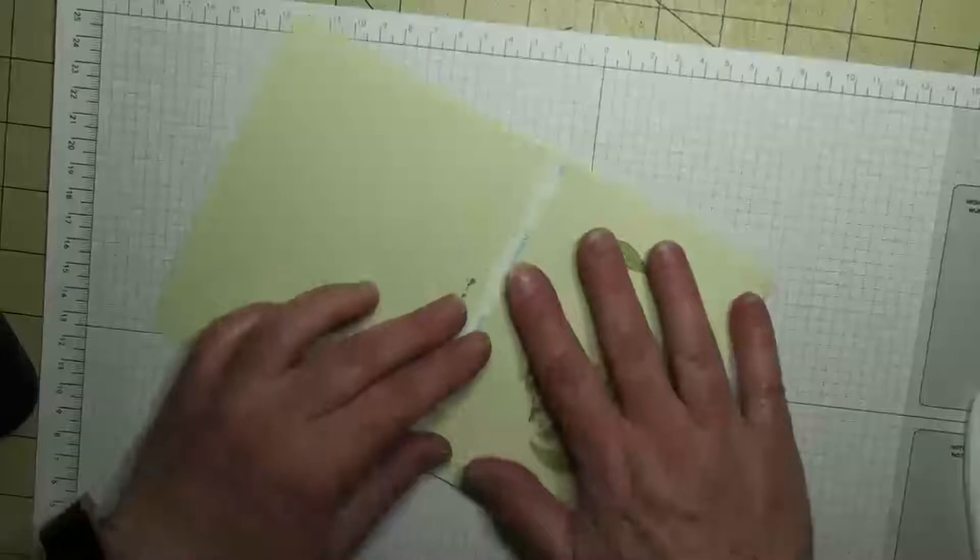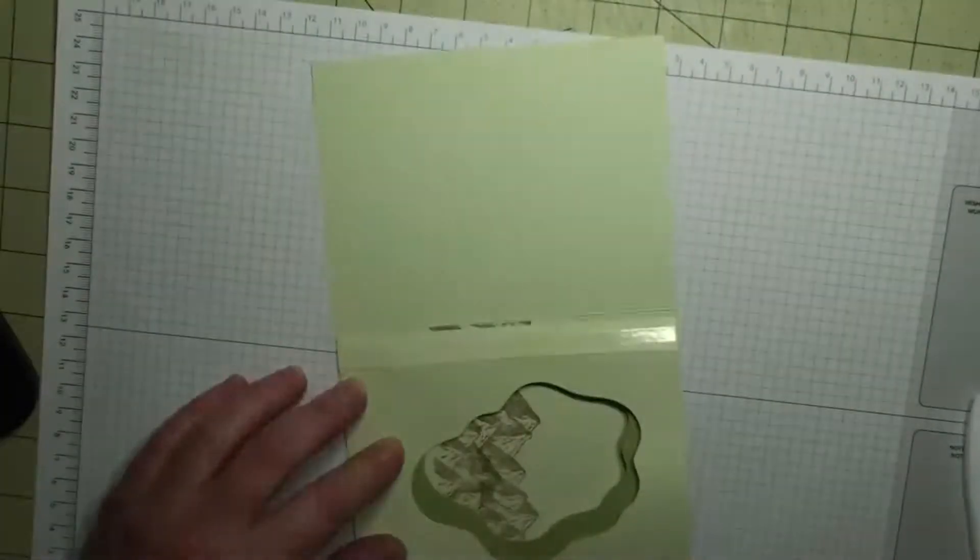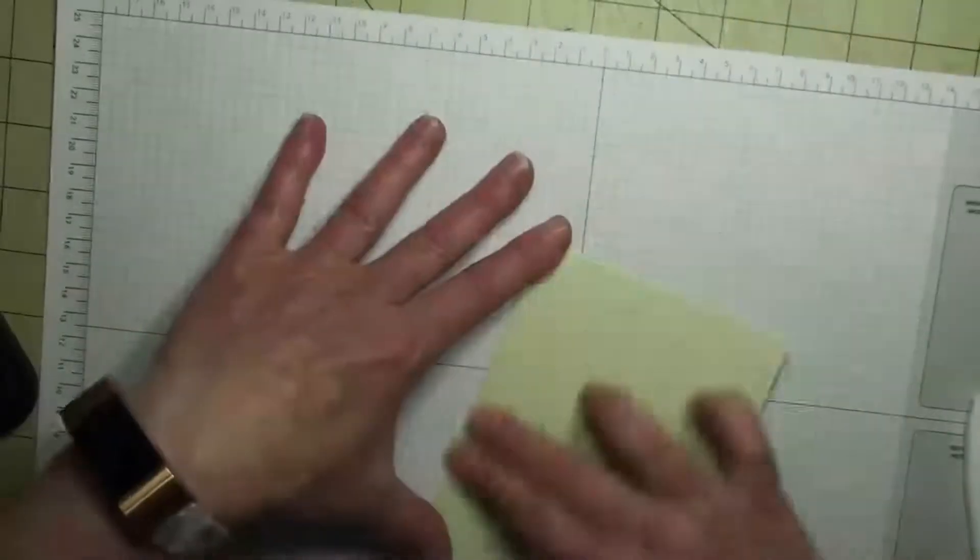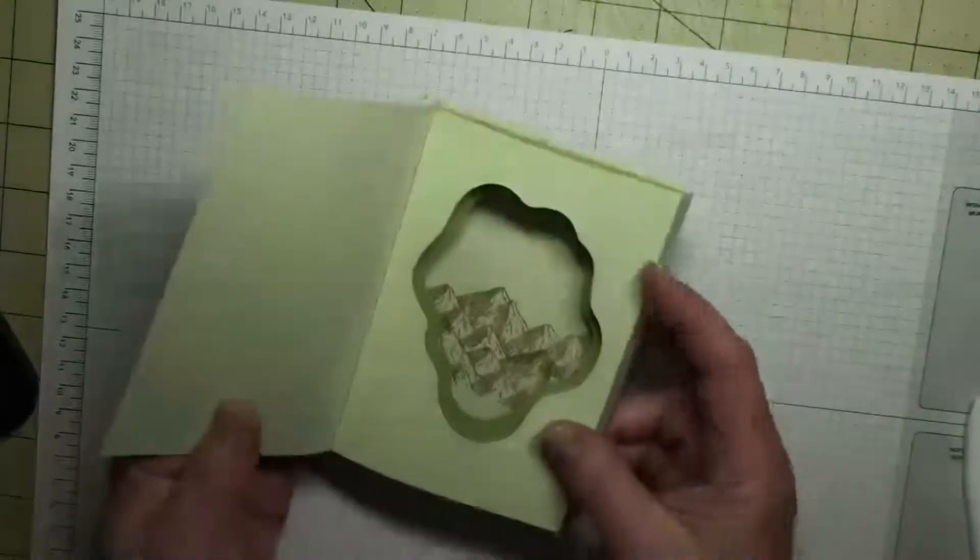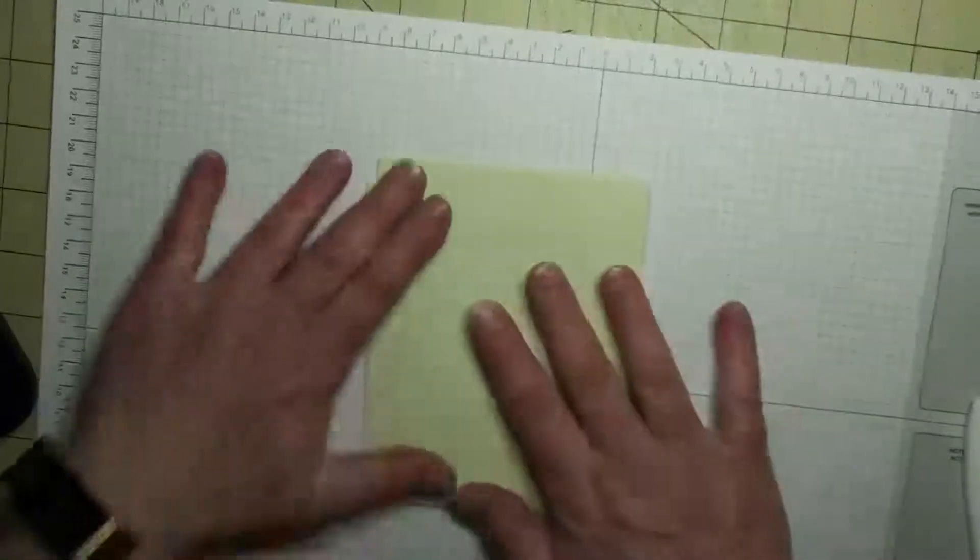And then the last thing to make the diorama card, I'm going to release that, and then we're going to bend or just close the card going that way. So then you've got it. It just pops up naturally when you open the card. Isn't that cool? So now we're just going to put the rest of the card together.